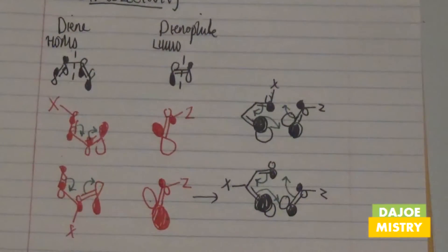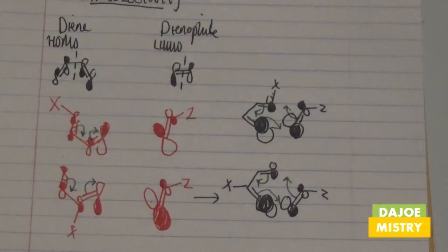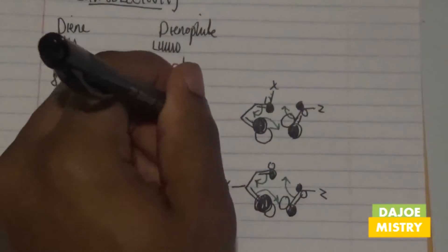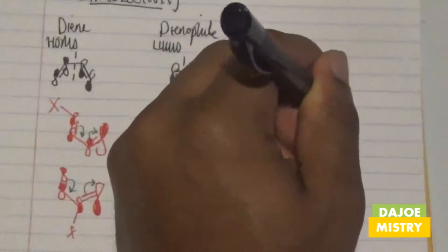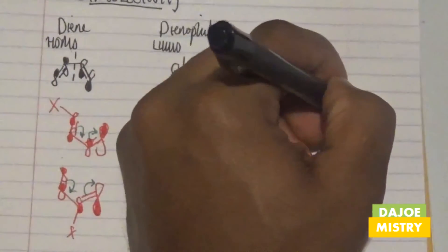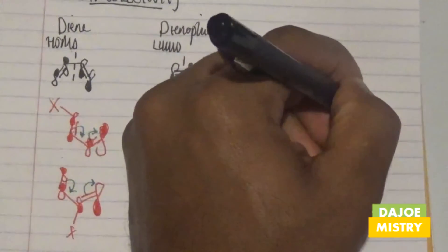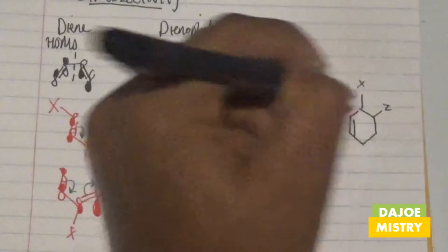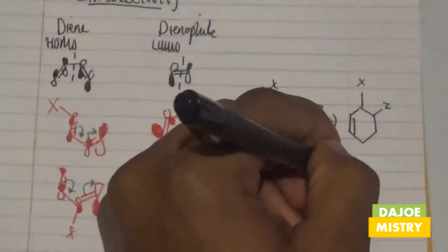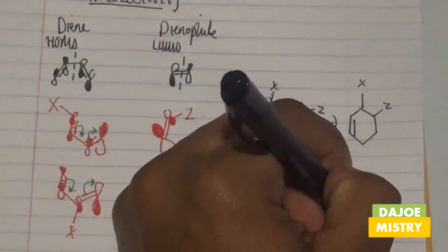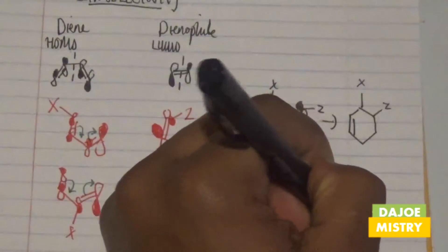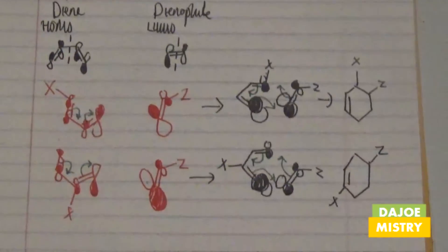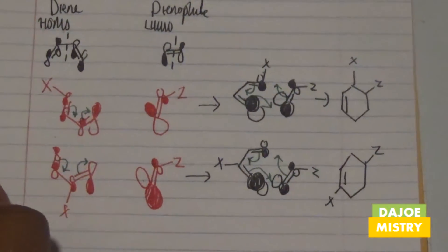That cycloaddition process gives two possible products. We get our ortho product and our para product. In one case we have X in the ortho orientation with respect to Z, and in the other case we have X in the para orientation with respect to Z.